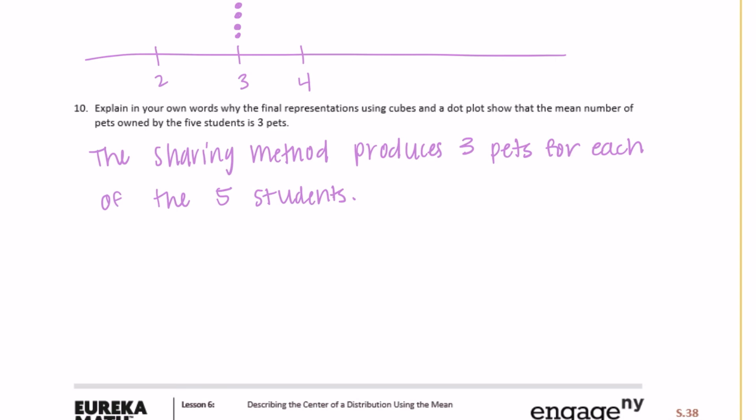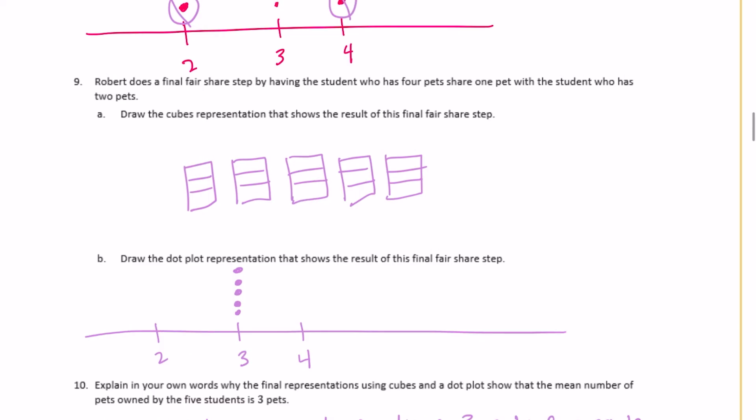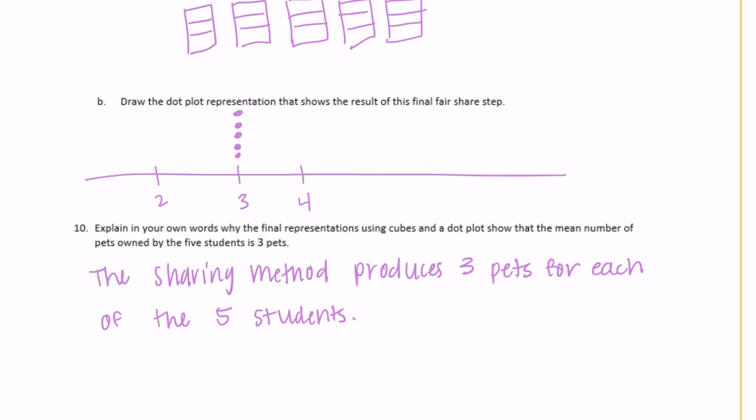To fully answer the problem: explain in your own words how the final cube and dot plot representations show the mean number of pets owned by the five students. We kept taking one away from the higher value and adding it to the lower value — sharing — until everyone reached the same number. The mean is 3.